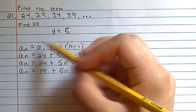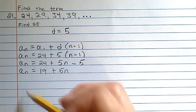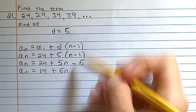So now that we have our common difference and our explicit formula, we can use the explicit formula to find the term 25,